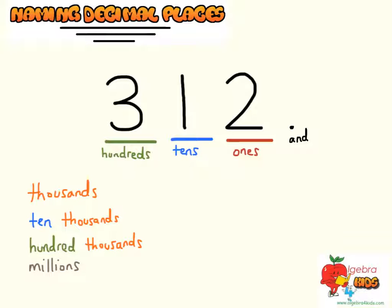If we have a digit after the decimal, let's say 4, then we say it to the tenth. For the other direction, we have tenth, hundredth, and thousandth, and so on — just by adding TH instead of S. So for tenths, the next digit would be hundredths with a TH. Thanks for watching.